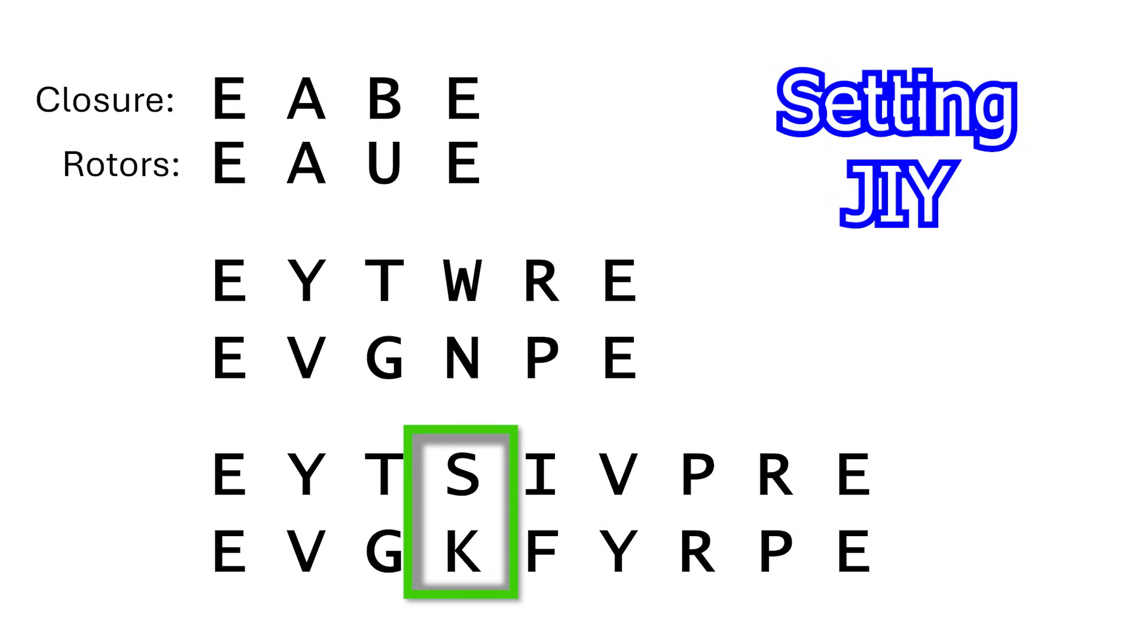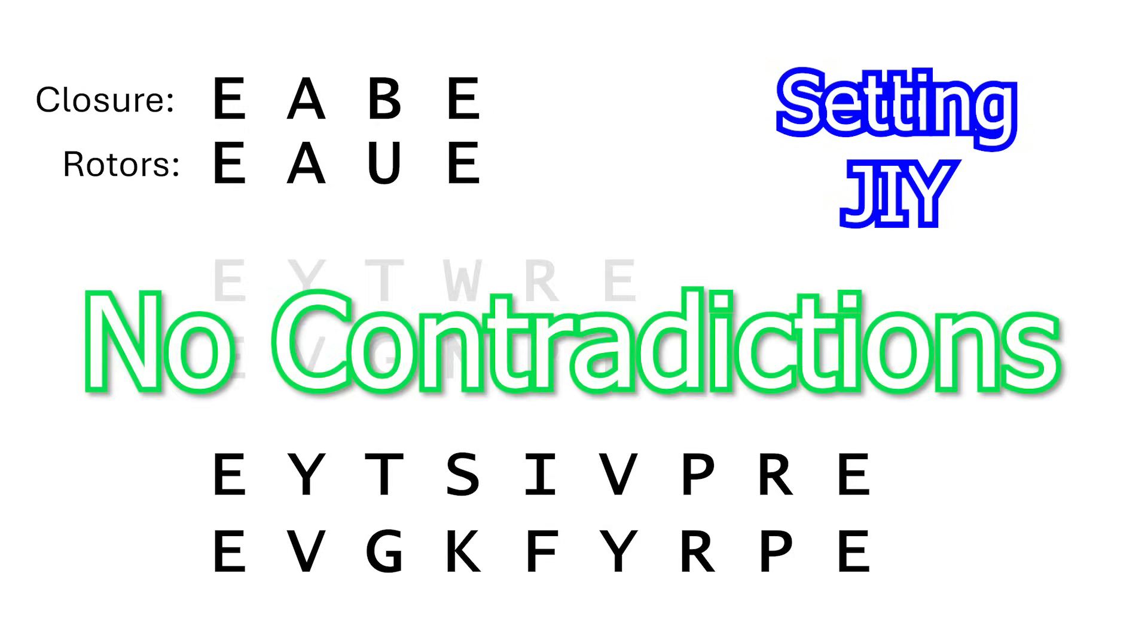In the final loop, S maps to K, and I maps to F, and that's it. There are absolutely no conflicts between any of the mappings.